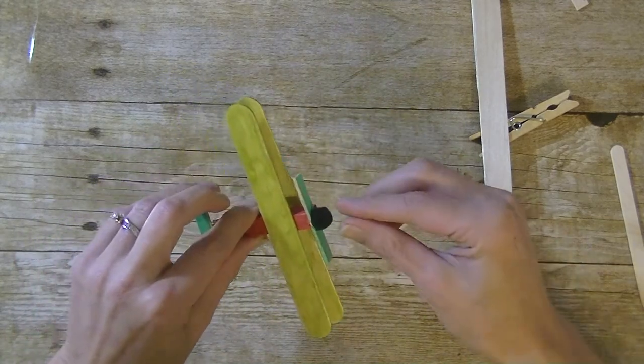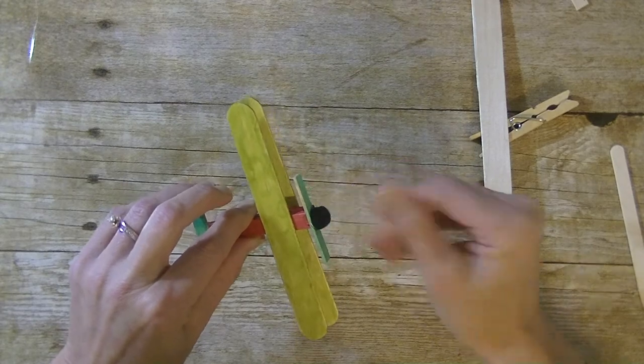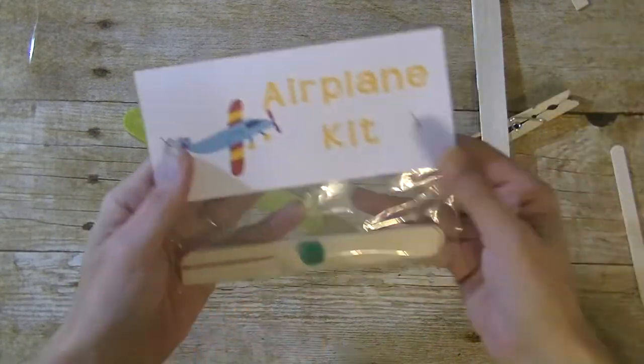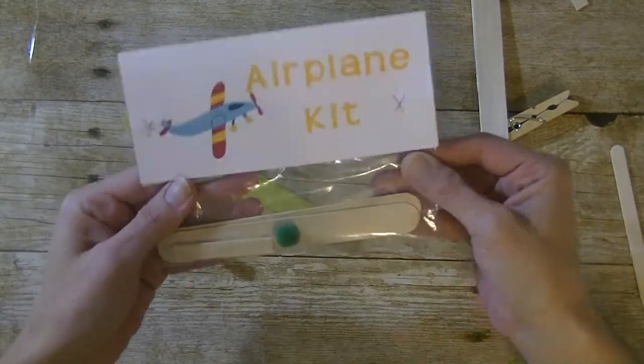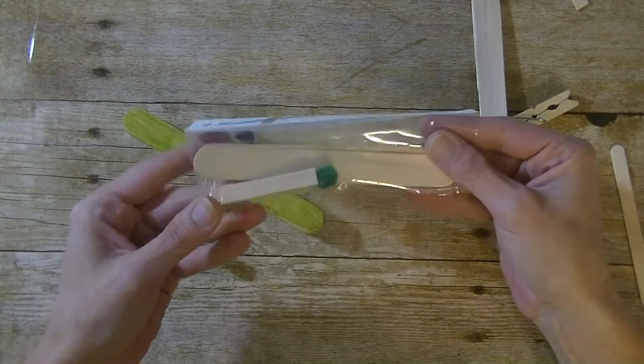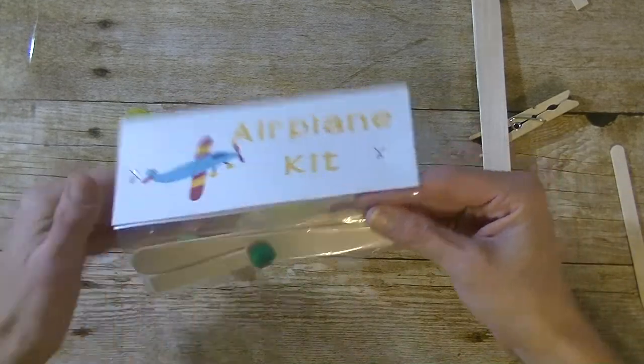So it's a really cheap craft or birthday party activity. What's fun - you can go on your computer and make little airplane kits like this one. It's just a little sandwich bag or snack bag, and I put the two popsicle sticks in there, the one I cut in half, and a little bit of a pom-pom.